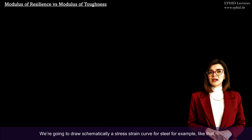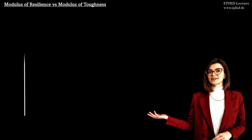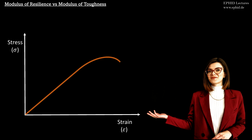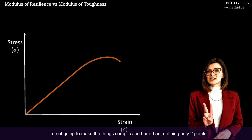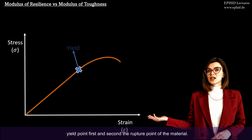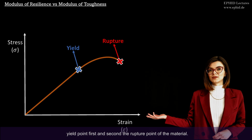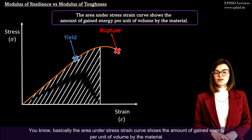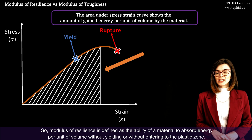We're going to draw schematically a stress-strain curve for steel, for example, like that. I'm not going to make things complicated here. I'm defining only two points: the yield point first, and second, the rupture point of a material. Basically, the area under the stress-strain curve shows the amount of energy gained per unit of volume by the material.